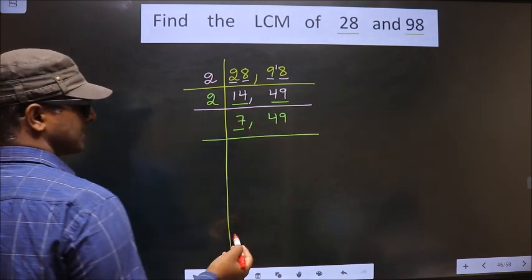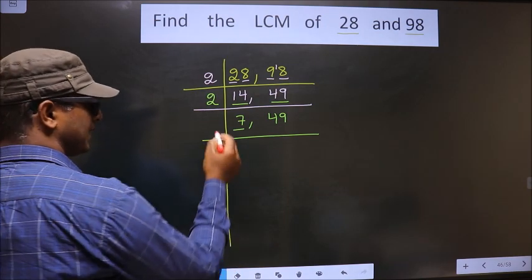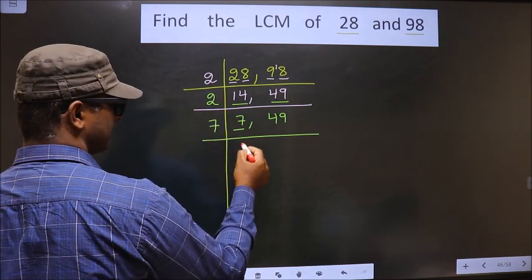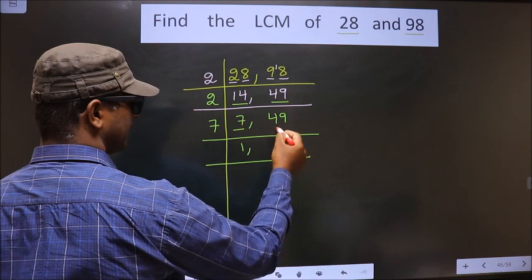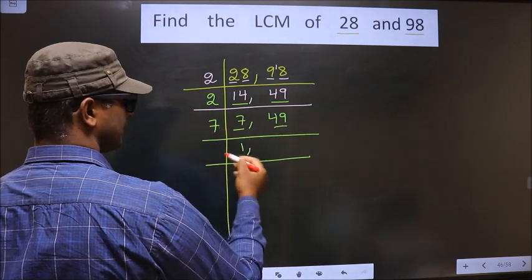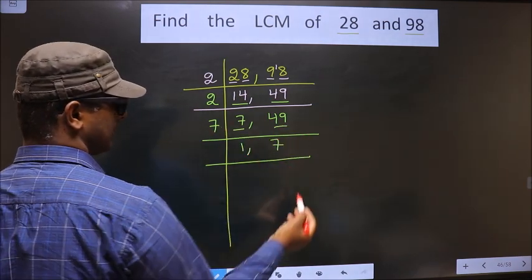Here we have 7. 7 is a prime number, so you take 7 times 1 equals 7. Here we have 49. When do you get 49 in the 7 table? 7 times 7 is 49.